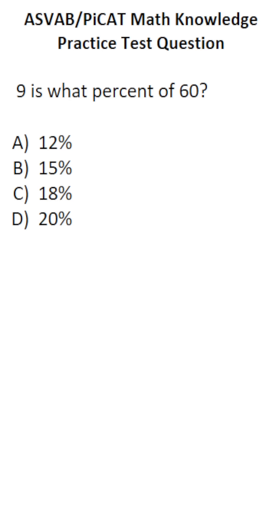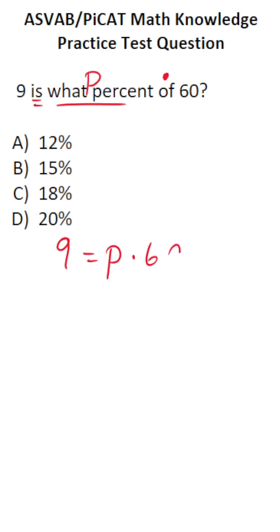This math knowledge practice test question for the ASVAB asks: 9 is what percent of 60? The easiest way to solve this is to translate the statement into an equation. '9 is' means 9 equals. 'What percent' is the unknown, so I'll call it P. 'Of' in math is usually multiplication, so we get 9 equals P times 60.